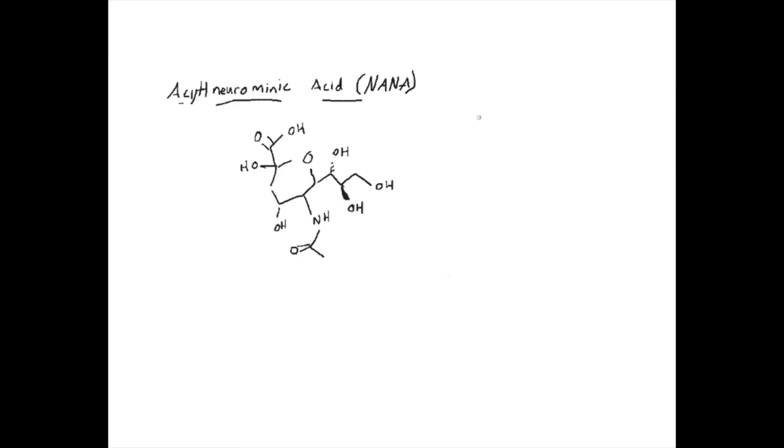Okay, so you get different namings based on how many NANAs you have. So you have to have both of these, but the NANAs can vary. So you have to have one or more acetylneuraminic acids. If you have one, it's called GM.